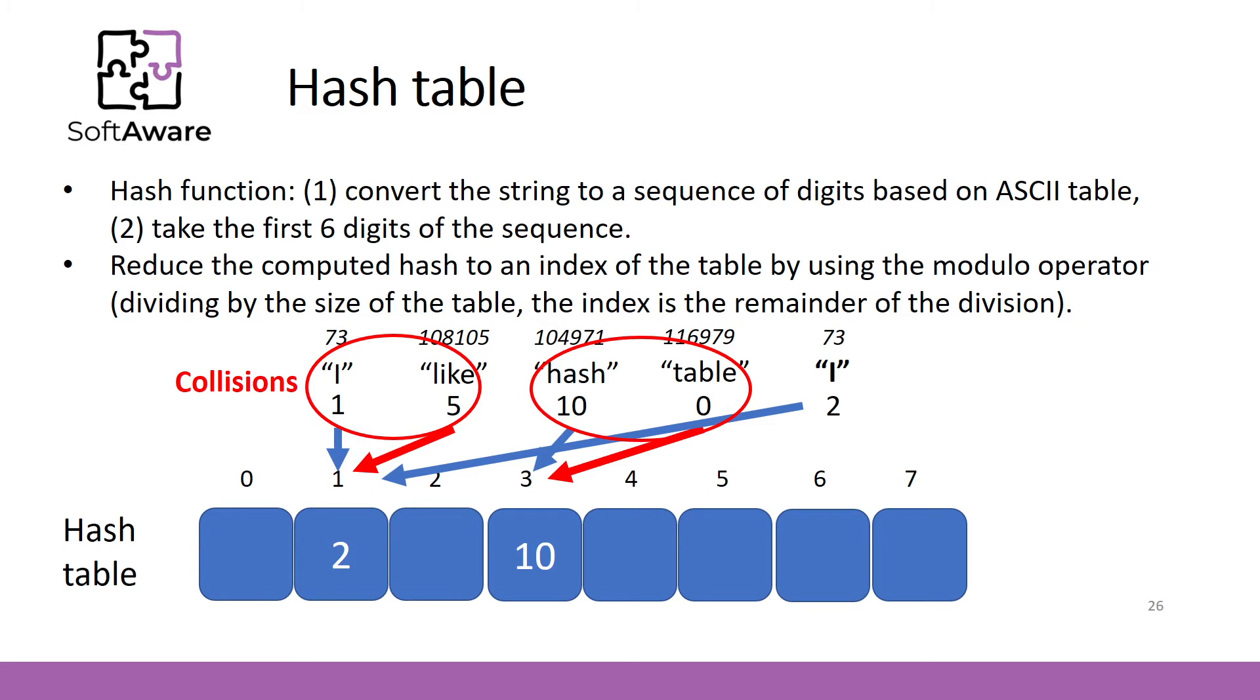Collisions in hash tables are a well-known problem. In fact, there are no good universal practical solution for solving collisions. A good hash function should distribute the keys uniformly, therefore collisions should not occur. But in practice, it is difficult to achieve perfect uniform distribution.